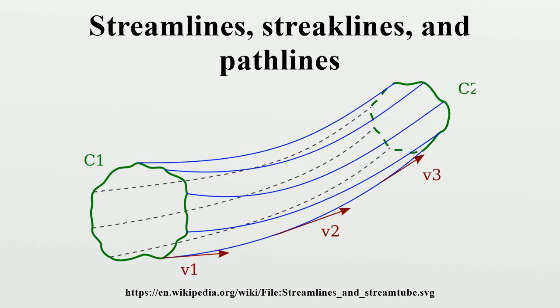Engineers often use dyes in water or smoke in air in order to see streaklines, from which pathlines can be calculated. Streaklines are identical to streamlines for steady flow. Further, the dye can be used to create timelines. The patterns guide their design modifications, aiming to reduce drag.